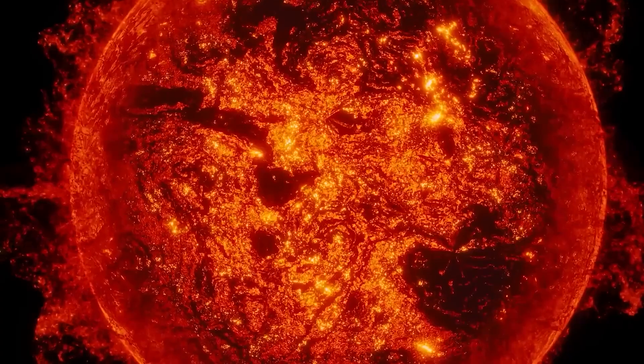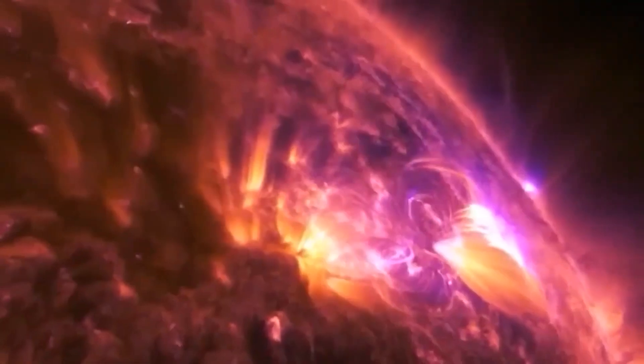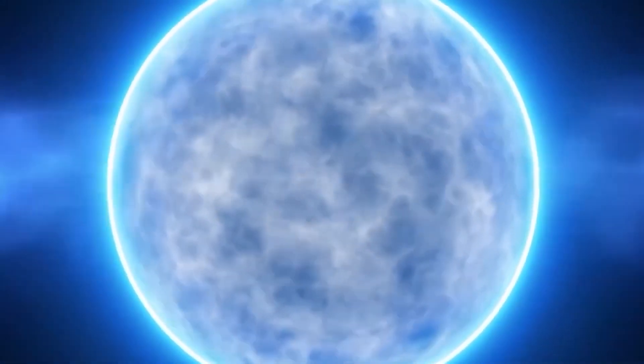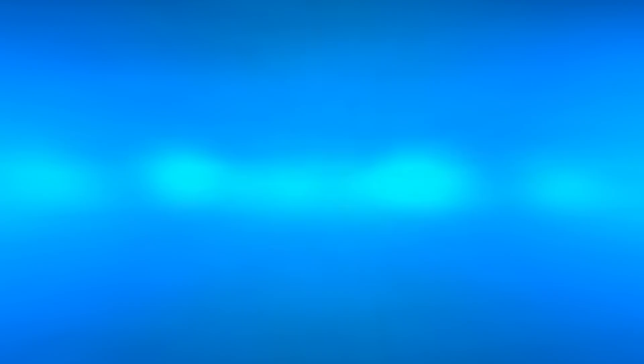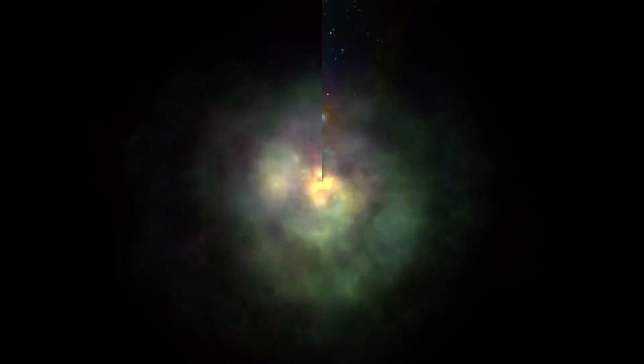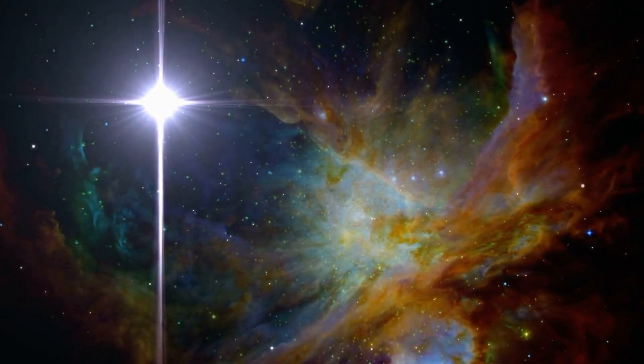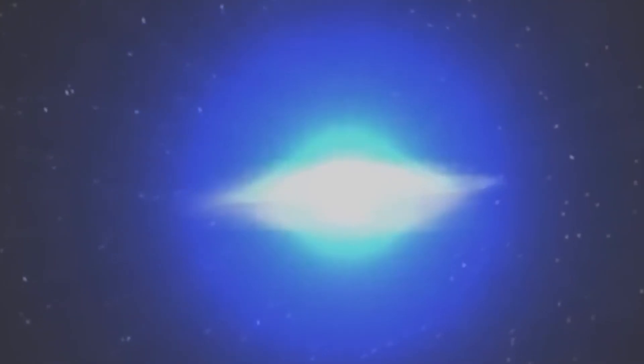Stars undergo an extensive journey through different stages in their evolutionary cycle. When new, these stars have relatively low temperatures and brightness. Subsequently, they advance to the main sequence phase, marked by nuclear fusion, where they remain stable for billions of years. Finally, as their hydrogen fuel is depleted, they enter the red giant phase, where they experience a rapid increase in temperature and brightness.